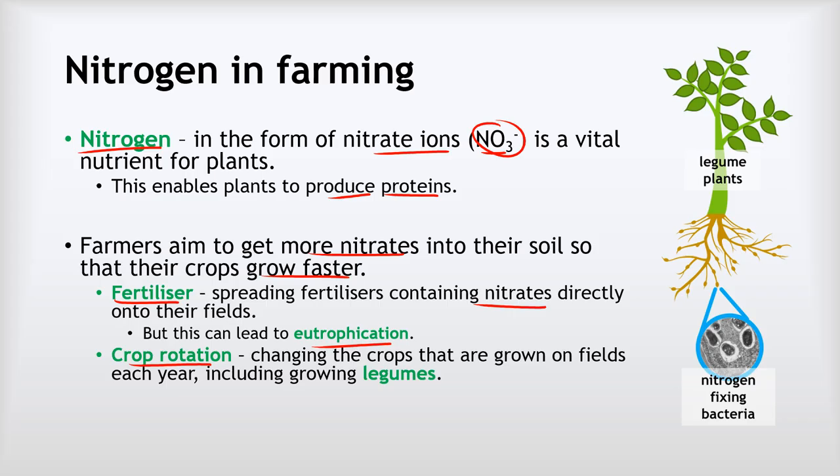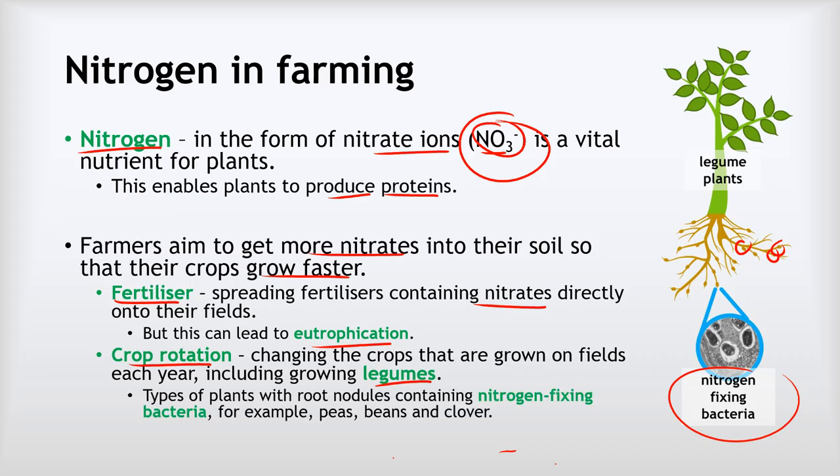Another way that farmers can get more nitrates into their soil is what we call crop rotation. Rather than planting the same thing on the fields each year, they'll have four different crops, and every year they'll move each crop one space around the rotation so that each field is growing something slightly different each year. When they do that, they will often have one year where they make sure they're growing plants called legumes. Legumes are plants that contain these little nodules on their roots, and in those nodules we've got bacteria called nitrogen-fixing bacteria that can take in the nitrogen gas from the air and turn it into nitrates. So growing these legume plants is a natural way to get more nitrates into the soil. The types of plants that do this are things like peas, beans, and clover. Farmers will often grow those as a natural way to increase the nitrates in their soil.